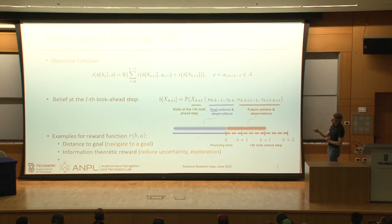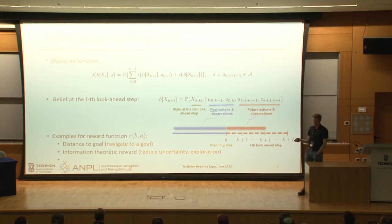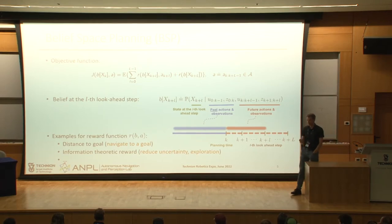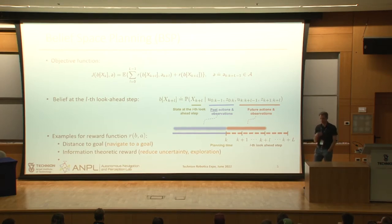This reward function is quite flexible. It can address tasks such as navigating to a goal, or information-theoretic rewards for tasks such as exploring the environment — if we want to reduce uncertainty and by that increase our accuracy in estimation.